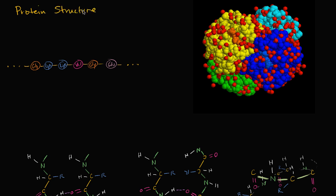To get a high level appreciation for protein structure, this is a hemoglobin molecule right over here. This hemoglobin molecule is made out of four polypeptide chains. Two of them have 141 amino acids, two of them have 146 amino acids, for a total of 574 amino acids. You see that they don't just go into some random configuration — they come into a configuration that is really good for what hemoglobin does, and that is being a transporter for oxygen within red blood cells.